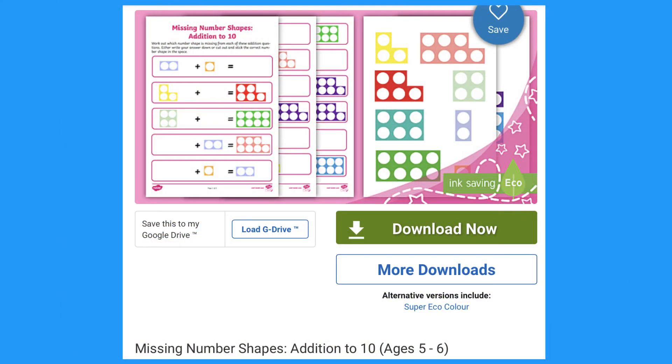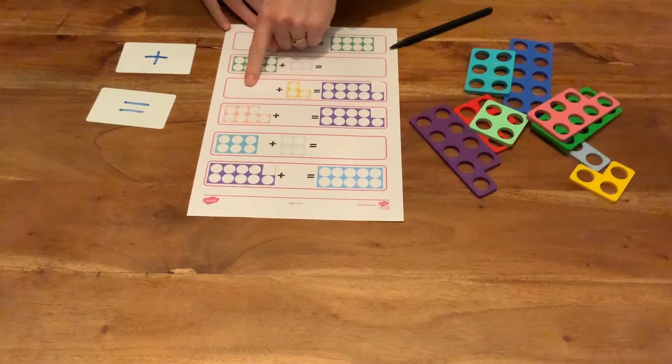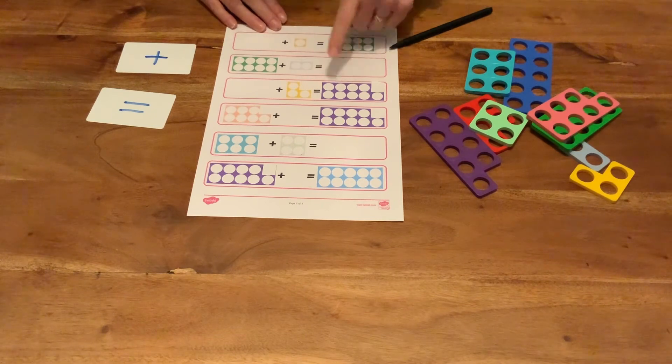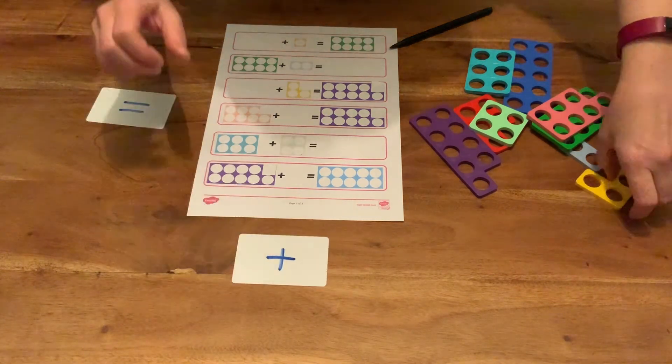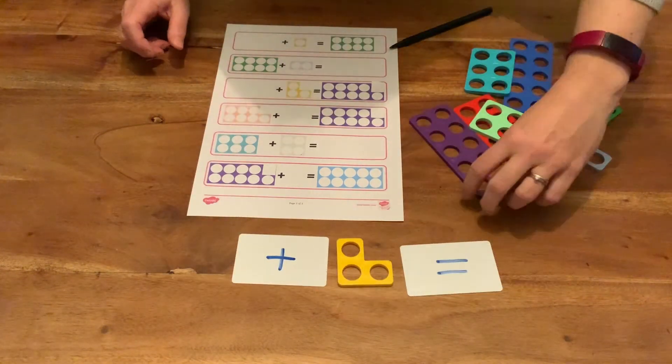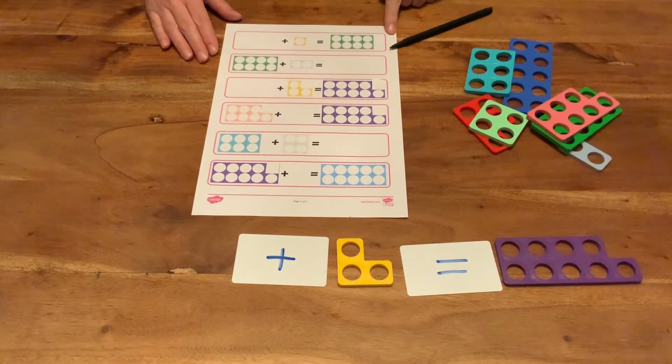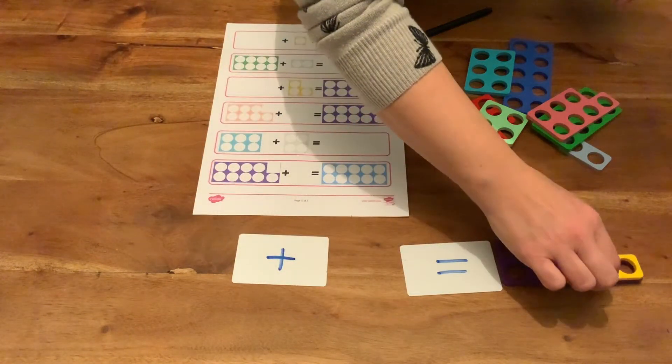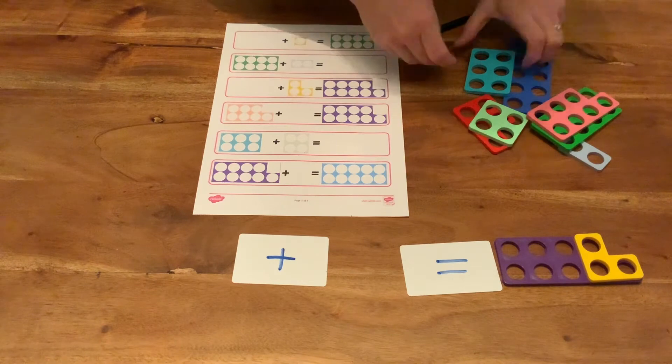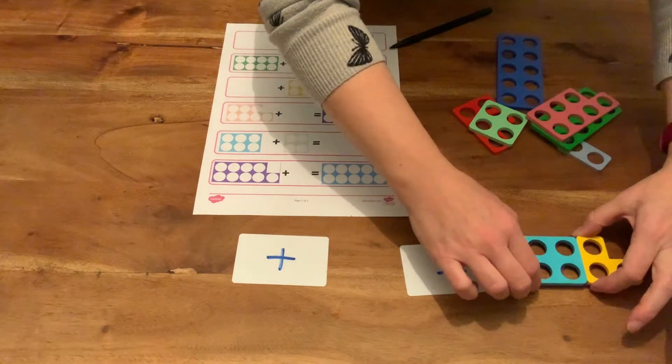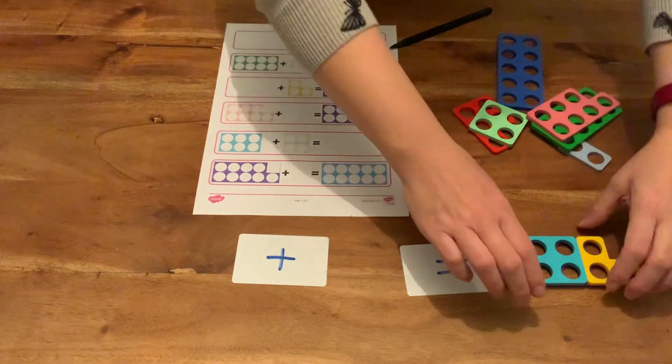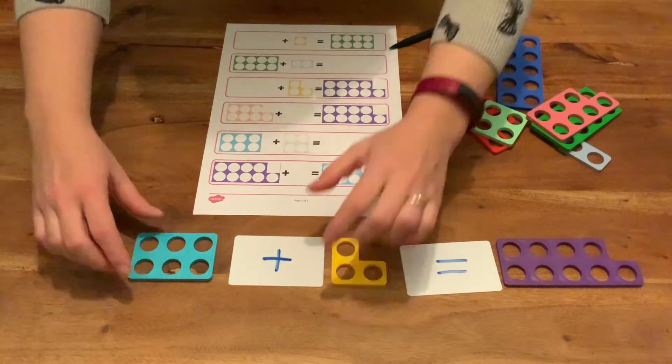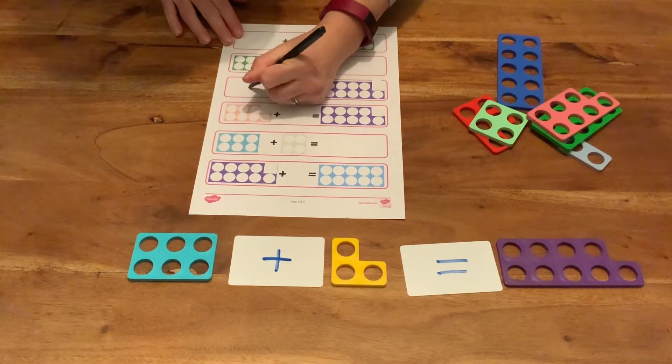Let's look at these missing number shape additions. Something add three equals nine. Children can make the number sentence with practical objects. Now children can take the three piece and put it on top of the nine to see what is left. It's six so we know that six goes with three to make nine. The missing number is six so we can write it in.